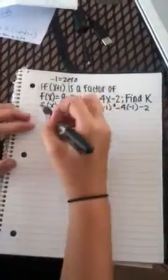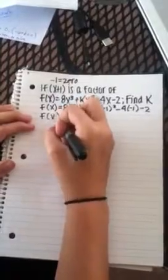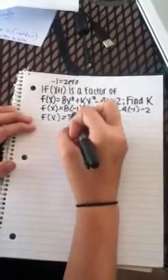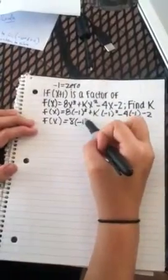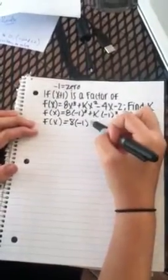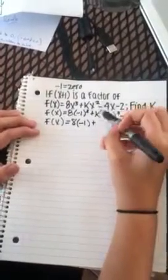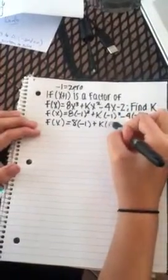Now we just need to further solve it. So it's going to be f(x) = 8(-1), because -1 to the third is just -1, plus k(1), because -1 squared is just positive 1.